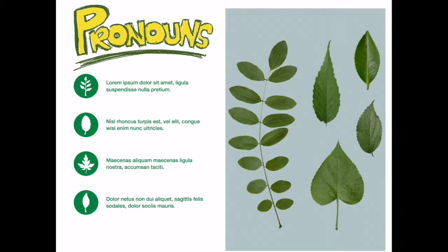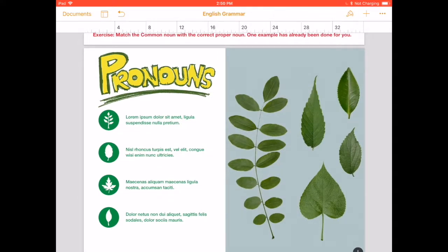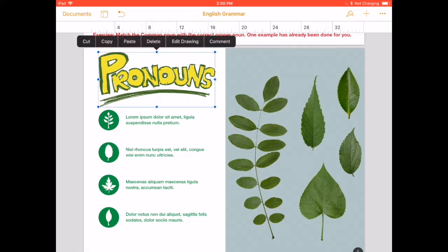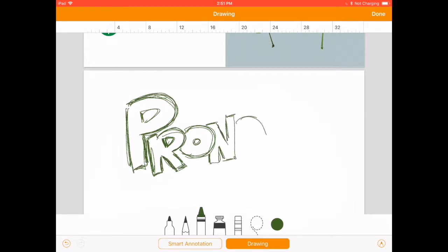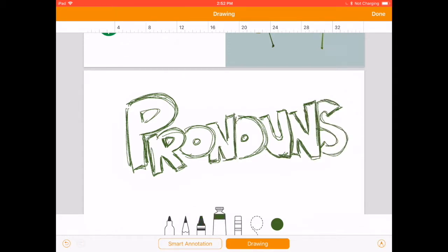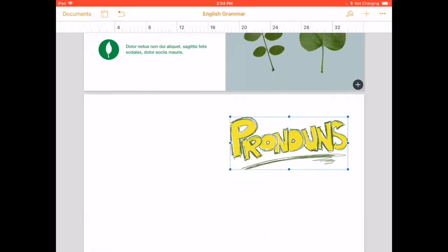Now we go back to the pages file. I want to show you how I made this pronouns title. Using my Apple pencil I'm just simply going to draw. You could draw anywhere on the page. Let me just draw on this clean sheet and show you. It just gives it a nice personalized touch. The nice thing about this is you could just simply put it on top of pictures.